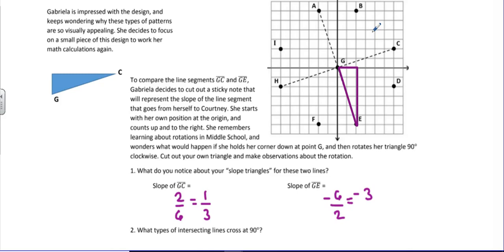We rotated the triangle 90 degrees and the segment that was on GC landed perfectly on GE. So we know that we have two line segments that cross at 90 degree angles. Number 2 asks us what type of intersecting lines cross at 90 degree angles. And the answer to that is perpendicular lines.